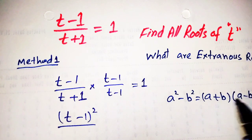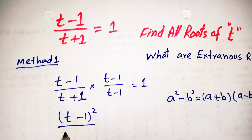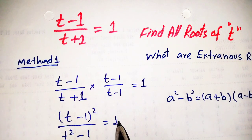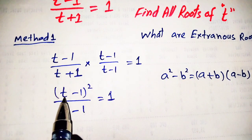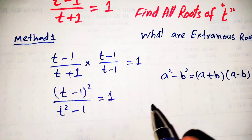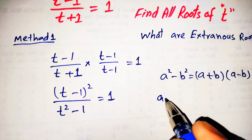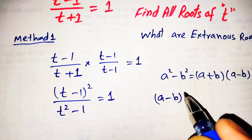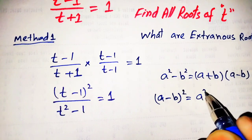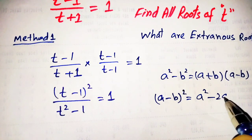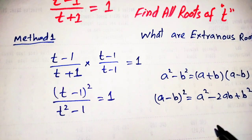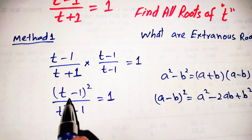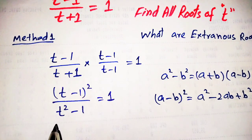According to this formula, the denominator term will become t squared minus 1, equal to 1. In the numerator the formula (a minus b) whole squared equals a squared minus 2ab plus b squared appears, giving us t minus 1 whole squared.